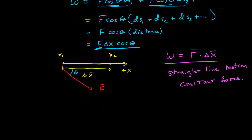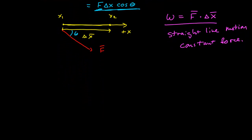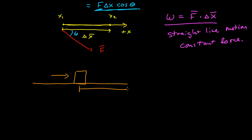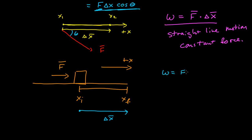An even simpler special case is when the force is in the same direction as the motion. So let's say I'm moving this box from x initial to x final, and my force is also along the x-axis. A lot of books do this as the first thing they present, but this is just a trivial special case of straight line motion with constant force. In this case, the angle between delta x — the vector pointing from initial to final position — and the force is just zero, so work equals the force times delta x.